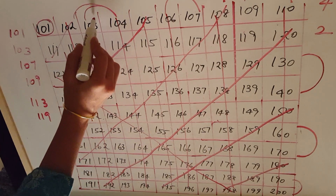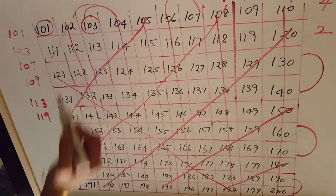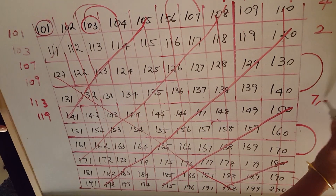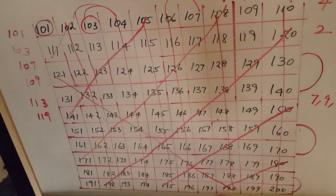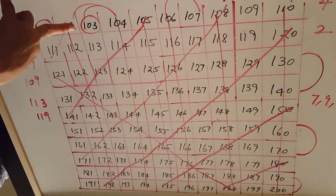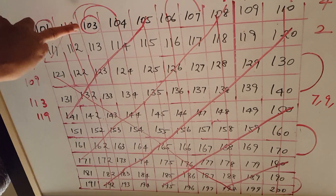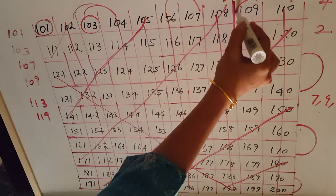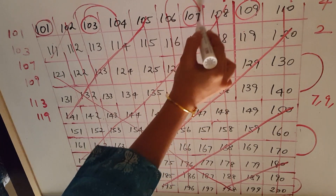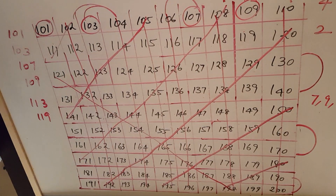First we will see: 103 is not divisible by any other number. You check with the 7, 9, and 11 times tables — is it divisible or not. The 7 times table does not divide it, 9 also does not divide it, 11 also does not divide 103. Similarly, 109 is not divisible, and 107 is not divisible. So 101, 103, 107, 109 — these four numbers are prime numbers.